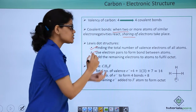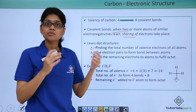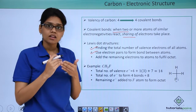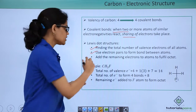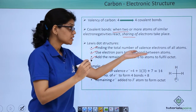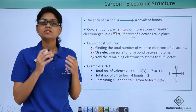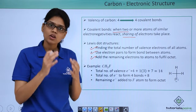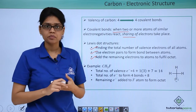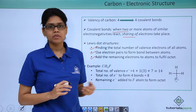The second point is to use the electron pairs to form bonds between the different atoms. The last point is to subtract these from the total and add the remaining electrons to satisfy the octet in all the atoms involved. These are the key rules to remember when drawing Lewis dot structures.